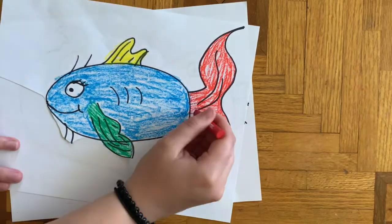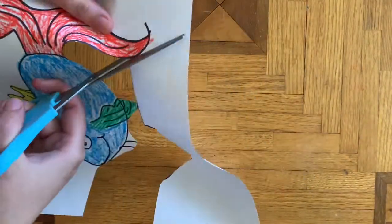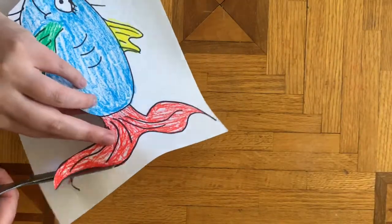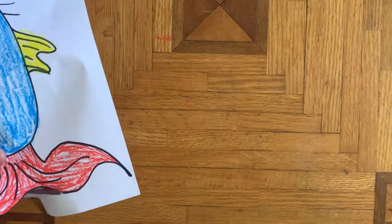After the coloring is done, the next step is to cut out your fish. So grab your scissors and begin cutting out the fish because we'll be putting it on a different background.